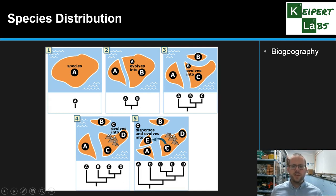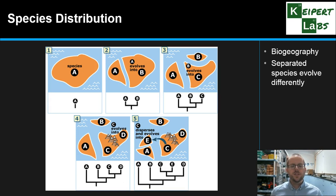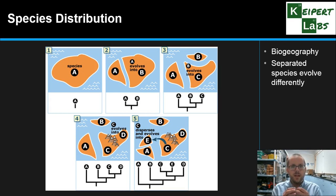We call this divergent evolution, where separated species evolve differently. One of the classic examples was Charles Darwin, when he looked at the finches — a type of bird on the Galapagos Islands off the coast of South America. The separation of the islands and the different environments there led to very different changes in the structure of the finches, particularly the beak and other features, depending on their different environment, while suggesting that at some point in the past they did share a common ancestor and then differentiated from there.